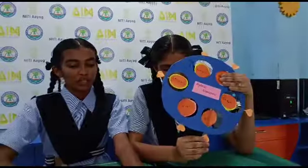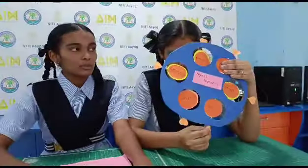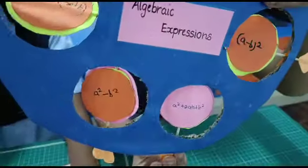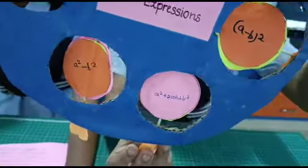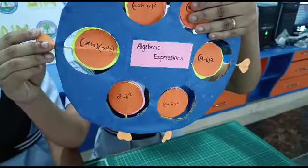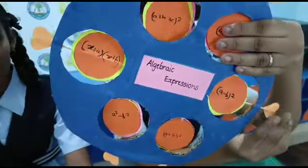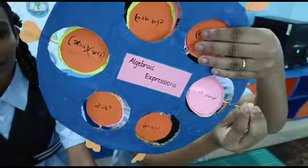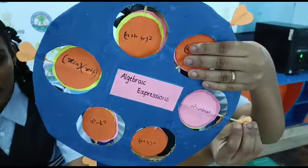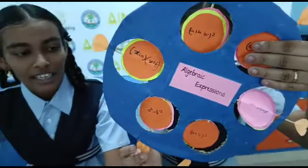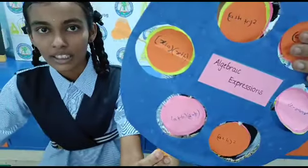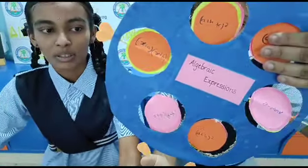Now I am going to say the formulas. (A + B) whole square equals A square plus 2AB plus B square. (A - B) whole square equals A square minus 2AB plus B square. A square minus B square equals (A + B) into (A - B).